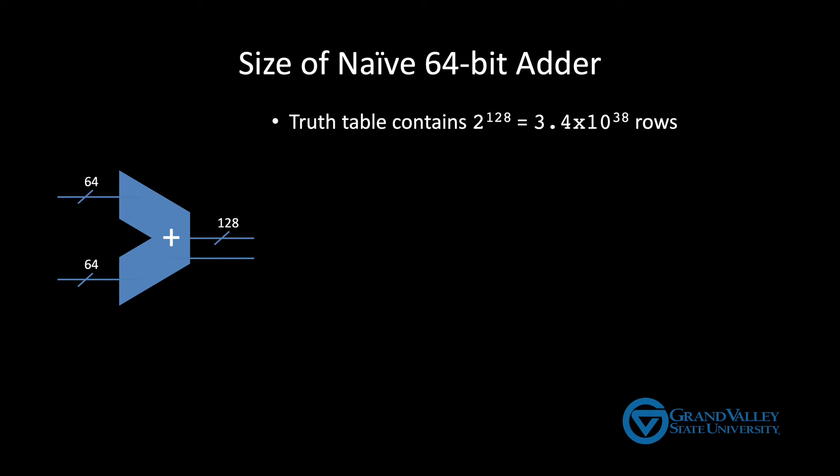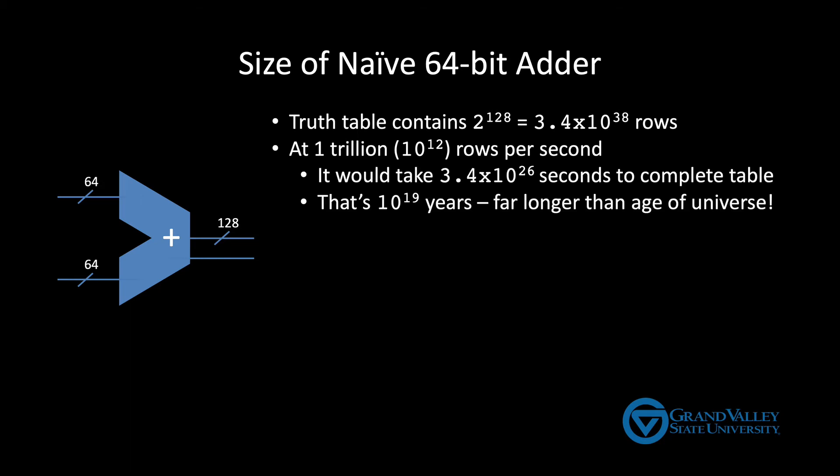Now actually, we could probably pick a bigger number than that because most desktops and laptops you buy today have more than one core. And, as you'll learn in 451, those cores have tricks in them that might let them be able to produce 2 or more rows per clock tick. So let's just be completely absurd. Let's pick a number far bigger than any computer today could generate and say we could generate a trillion rows per second. So at that rate, which we can't even achieve, it would still take 10 to the 19 years to complete this truth table.